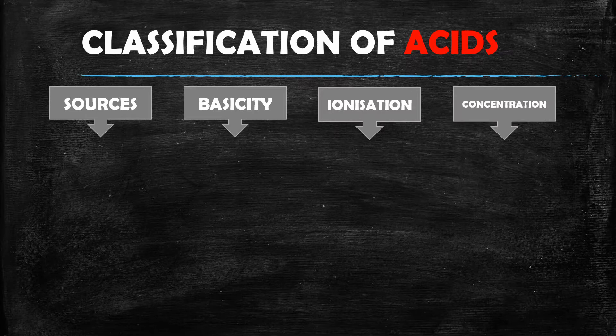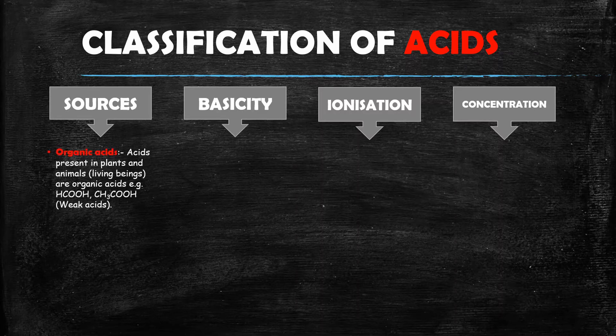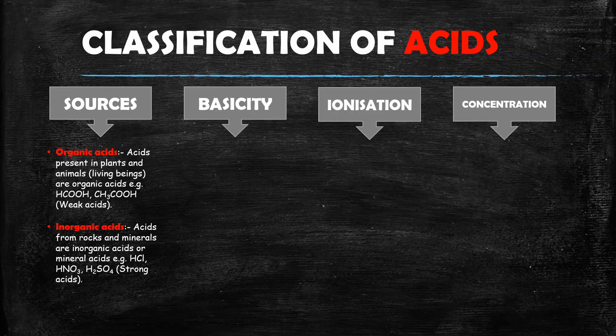Third is ionization. The fourth classification is based on concentration. Starting with source, we have two types of acids. The first type is organic acid — these acids come from plants and animals, from living beings. Examples of organic acids include methanoic acid and acetic acid.